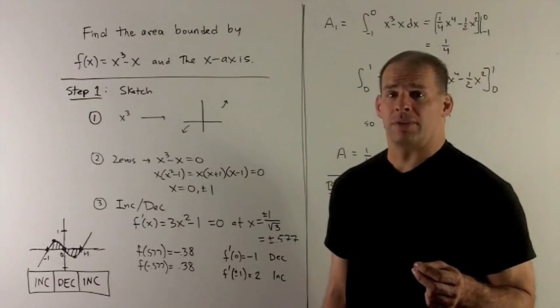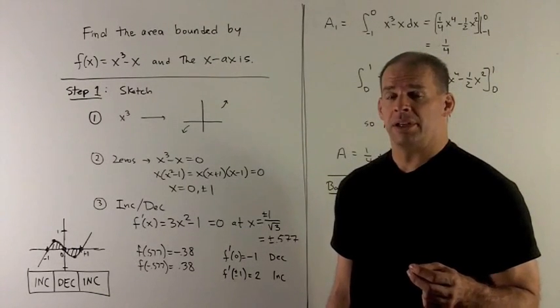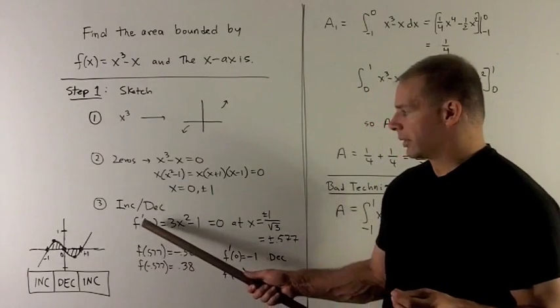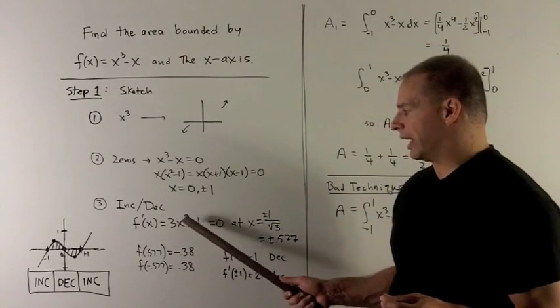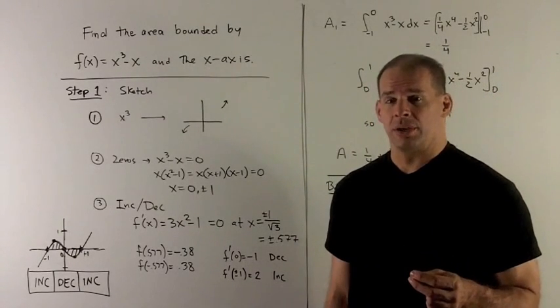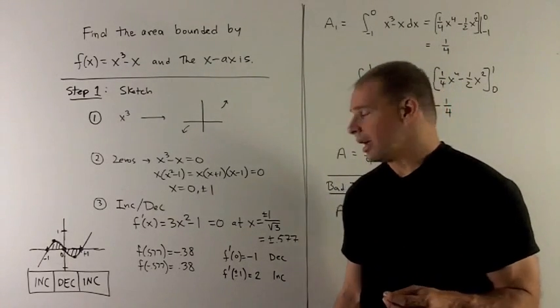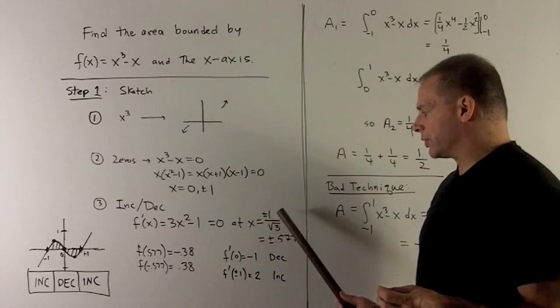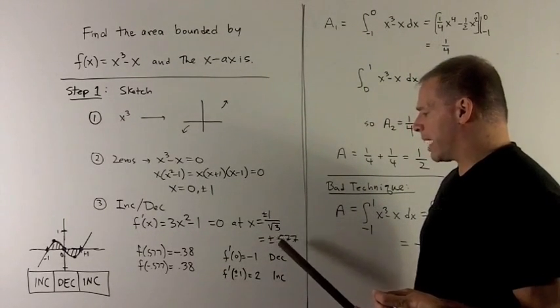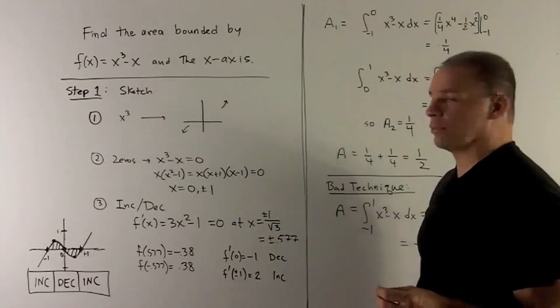Then you can look for increasing and decreasing. What I'll do is take the derivative. I'm going to have f'(x) = 3x² - 1. I'll get critical points when that's equal to 0, and that's going to happen at x = ±√(1/3), which is ±0.577, roughly.